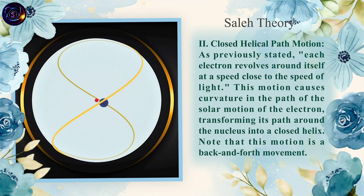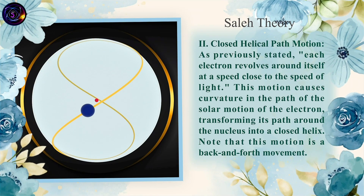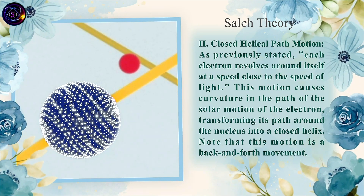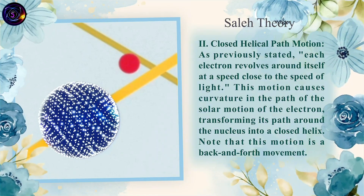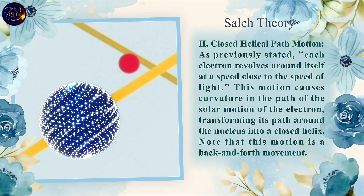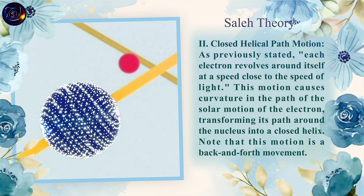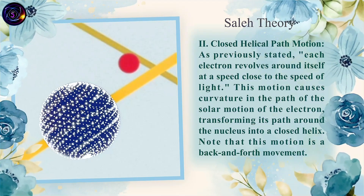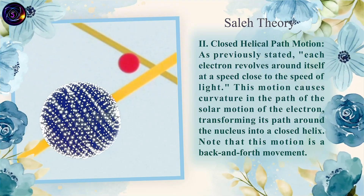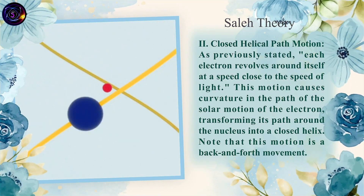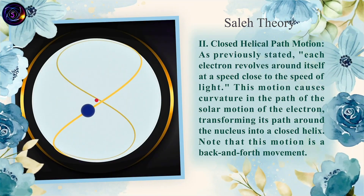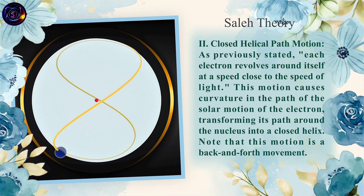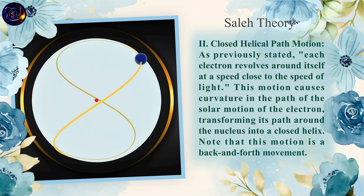2. Closed Helical Path Motion: As previously stated, each electron revolves around itself at a speed close to the speed of light. This motion causes curvature in the path of the solar motion of the electron, transforming its path around the nucleus into a closed helix. Note that this motion is a back and forth movement.